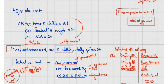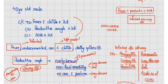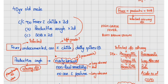Fever associated with chills and daily spikes suggests this is a high-grade fever — that is our first positive finding. The productive cough suggests an airway disorder. The rusty brown sputum is characteristically present in streptococcal pneumonia — that is another important positive finding.